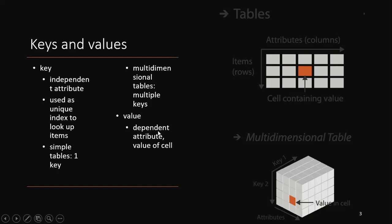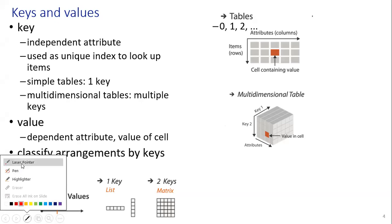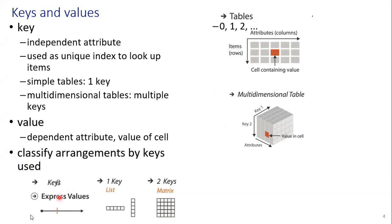For values, dependent attributes are there — we have values of cells. For tables, columns are used as attributes and rows as items. The values are contained in the cells. For the multidimensional table, this is an example for a three-dimensional table covering keys and values.